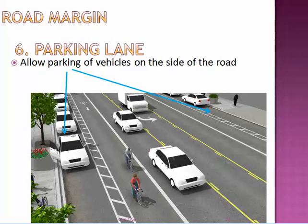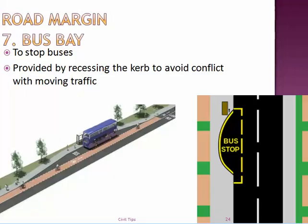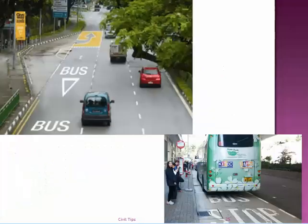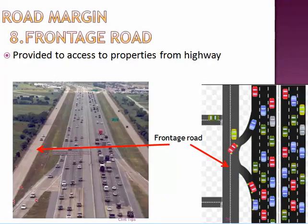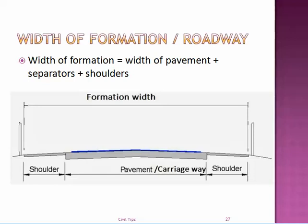The sixth is the parking lane, which allows parking of vehicles on the roadside along the curb. The seventh is the bus bay — it is provided by recessing the curb so that buses can stop and take passengers without conflicting with moving traffic. As shown in the figure, the width of the road is increased so buses can stop while through traffic moves through the lanes. The eighth is the frontage road — a road parallel to the main highway to access properties from the highway.